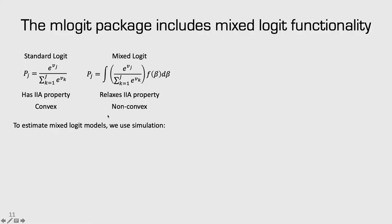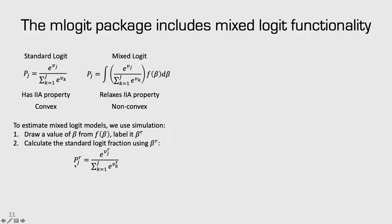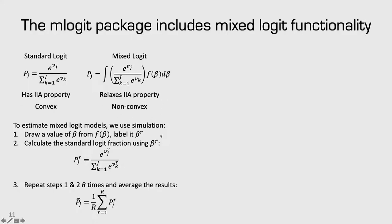A good way to build confidence in reaching a global maximum is to rerun the model multiple times with different starting points — if we keep getting the same results, we can be reasonably confident. To estimate the mixed logit model, we use simulation. First, draw a value of beta from the PDF of beta, label it beta_r, plug it into the logit fraction to get probability p_r, and store p_r. Repeat this many times, and our estimate of p_j is the average of all p_r values. Because this simulation must be repeated every time p_j needs to be computed during maximum likelihood, the mixed logit takes much longer to run.